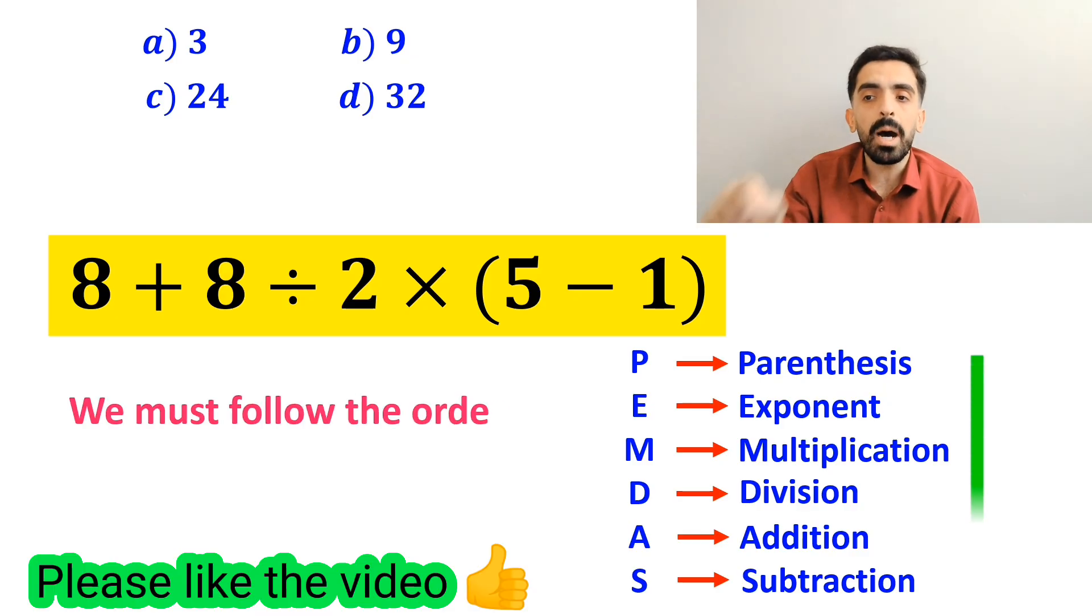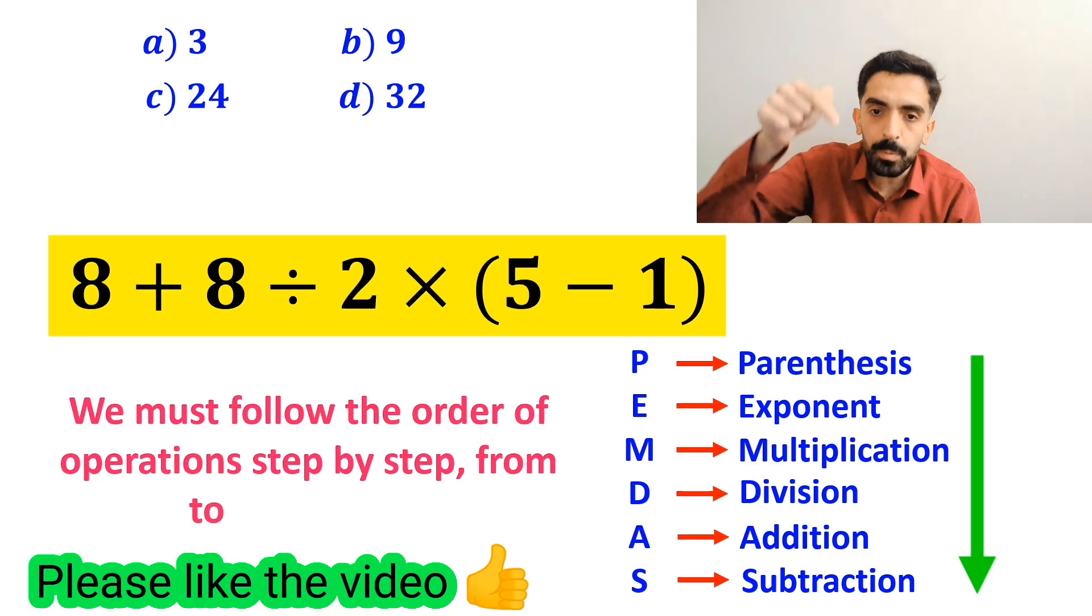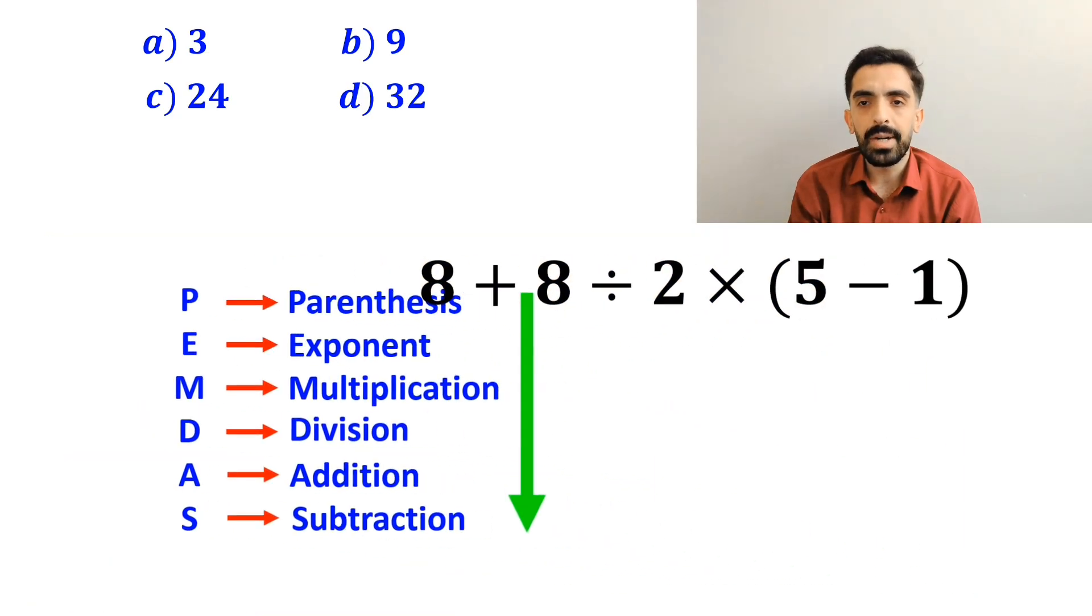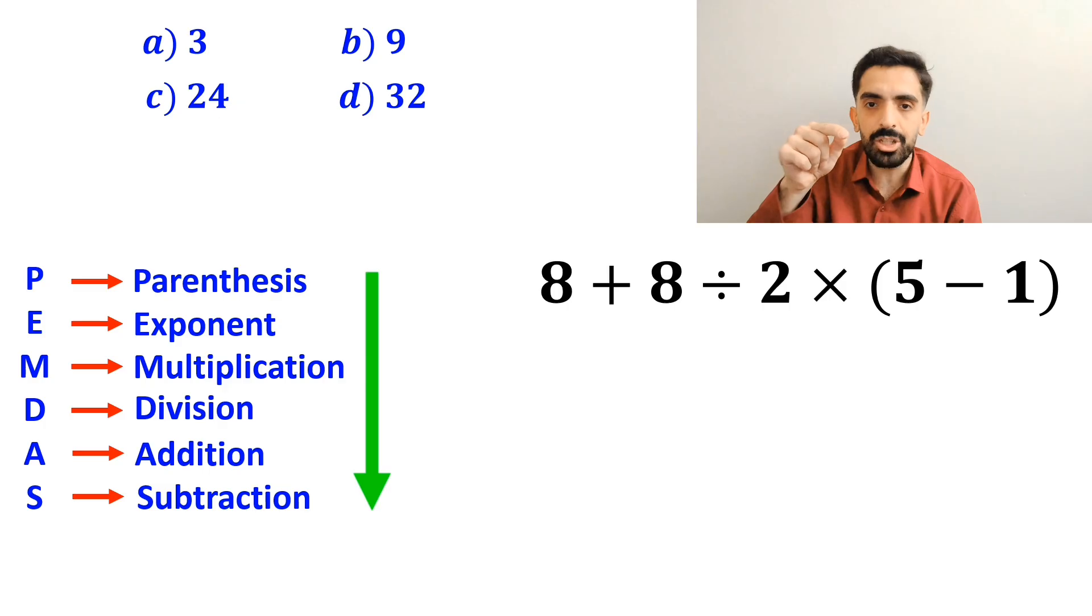We must follow the order of operations step-by-step from top to bottom. As you can see in the image, in this expression, first we have an addition sign, then a division sign, followed by a multiplication, and finally parenthesis.